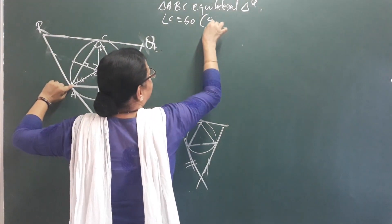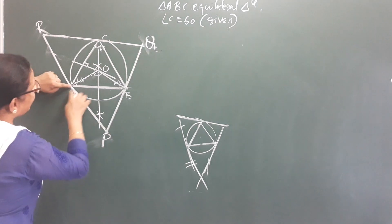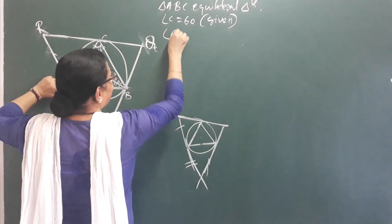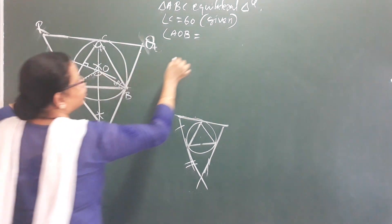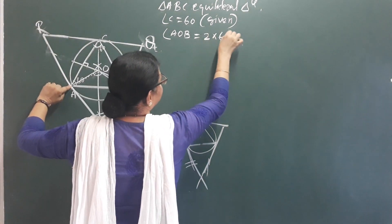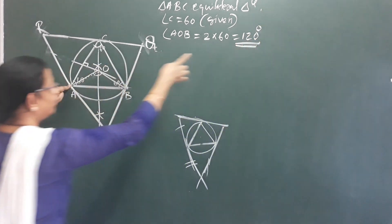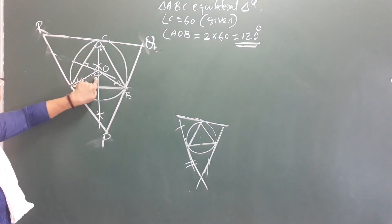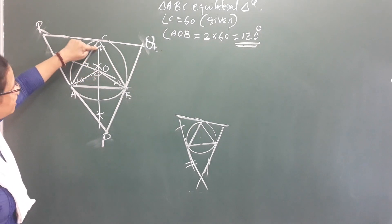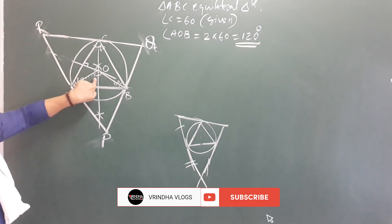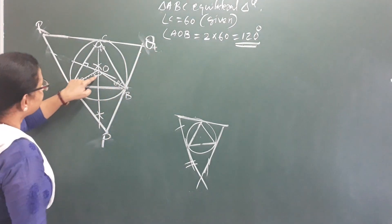It is given — it is equal to 60 degrees. The angle A, O, B is equal to 120 degrees, that is 2 into 60 degrees. What is the reason? What is the central angle? The central angle is double — that is, the angle is double. We have studied the angle. This angle is equal to 120 degrees.